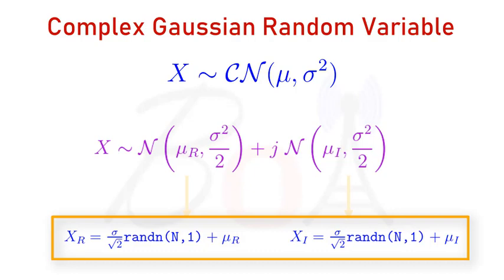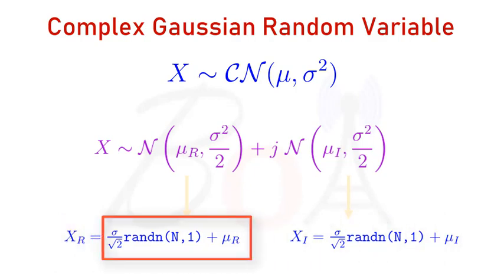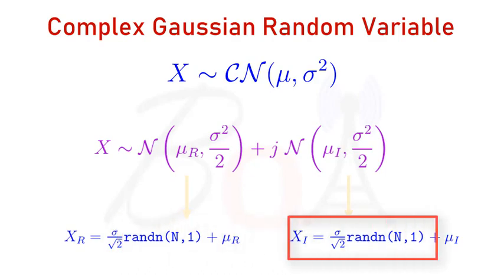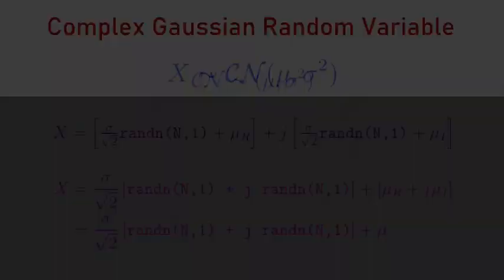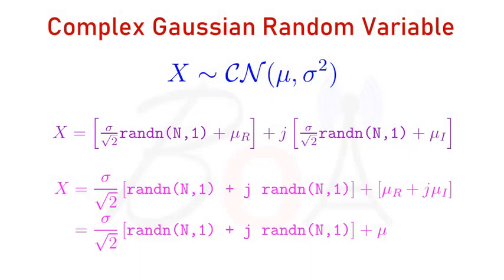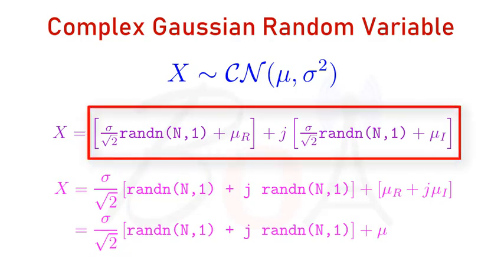Let's move forward. A column vector containing N samples of random variable Xr can be generated in MATLAB by using this command. Similarly, N samples of random variable Xi can be generated by using this command. Now, the samples of random variable X can be generated in MATLAB using the command given here.